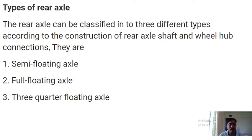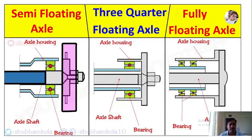Now we will see the types of rear axles: that is semi floating axle, full floating axle, and three quarter floating axle. These are the comparison diagrams for semi floating, fully floating, and three quarter floating axles.